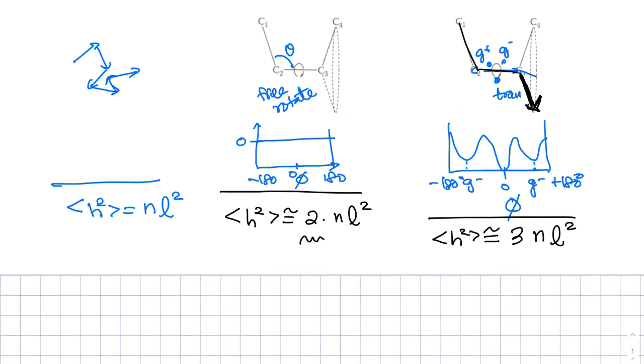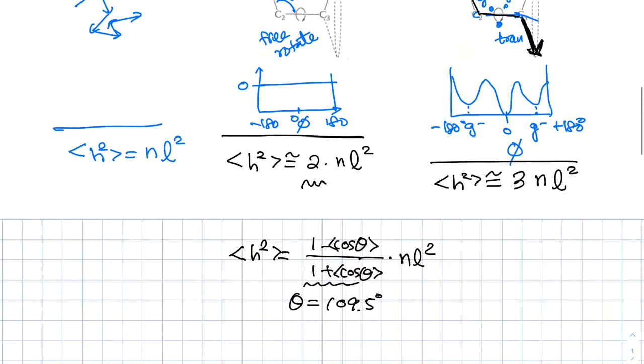The exact formula for free rotation is actually can be found in the book. What they say is H square is one minus cosine theta, one plus cosine theta. And I guess they have to do the average value. But that theta is pretty much fixed at 109.5 degrees, and then N L square. And this value happened to be approximately two for the case when the angle, bond angle is fixed as 109 degrees. That's a free rotation.